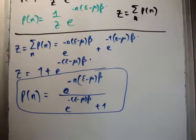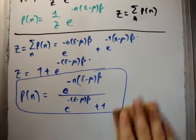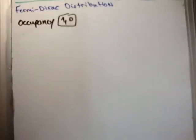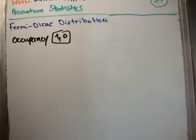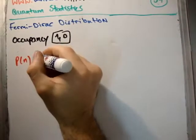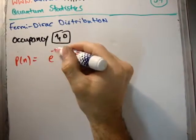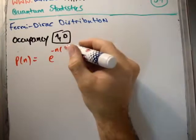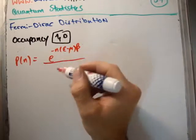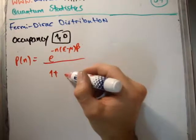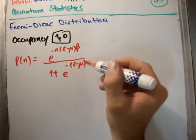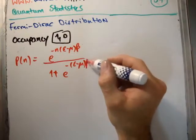So how do we step from there to the Fermi-Dirac distribution? Well, it's not a big step. The probability of state n occurring is equal to e to the minus (ε - μ)β divided by 1 plus e to the minus (ε - μ)β.